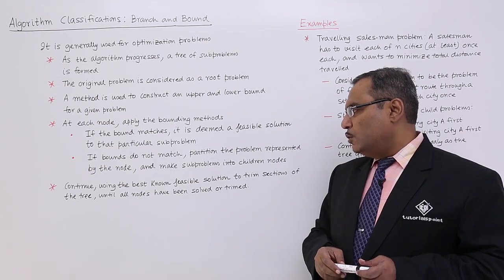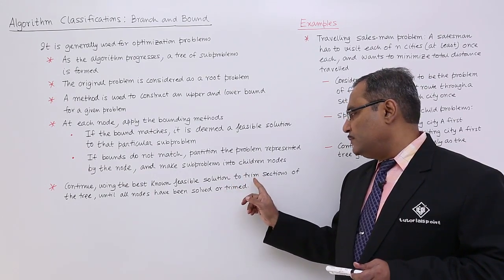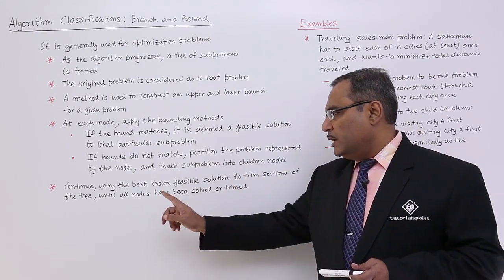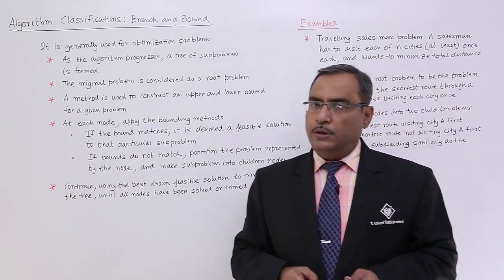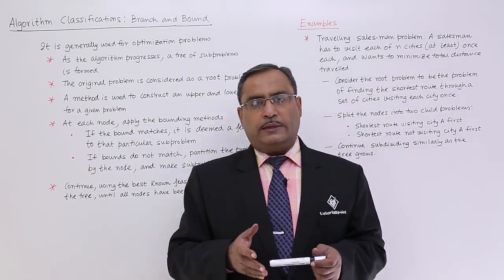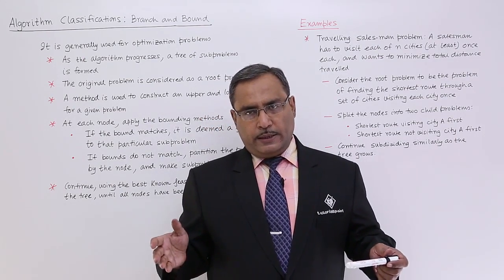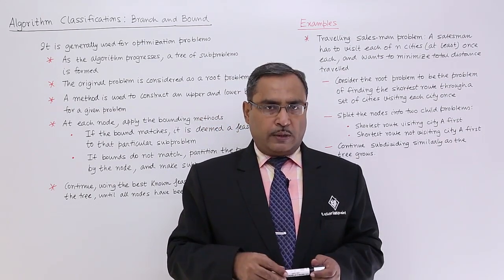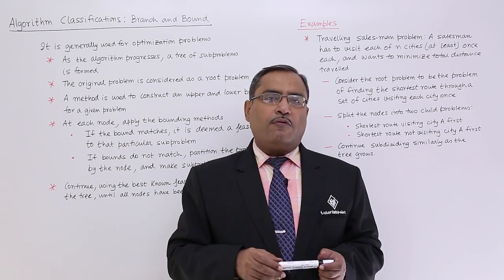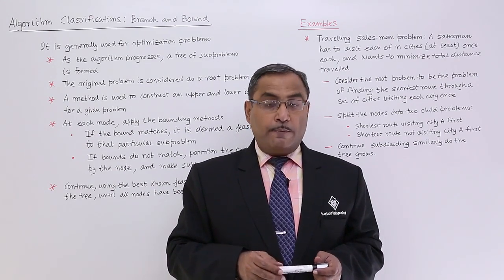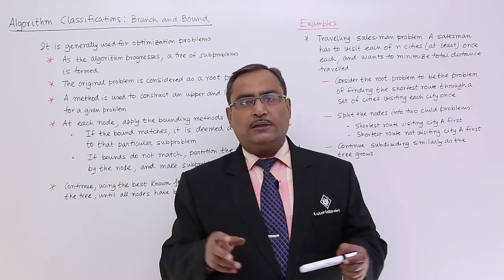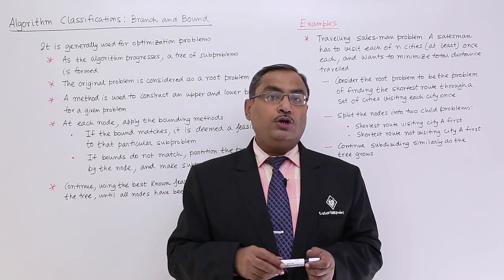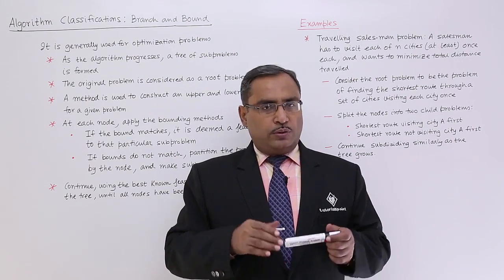Continue using the best known feasible solution to trim sections of the tree until all nodes have been solved or trimmed. We shall have to select the most promising sub-problems. And then from there, we shall go for further branching, but we shall bound or trim the other sub-problems which are not promising enough. So in this way,